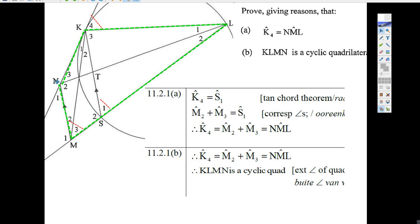But angle M and S here, NMS, this angle in here, which is M2 plus M3, that equals S1 because those are parallel lines. That's corresponding angles. Okay, so there we have it. K4 equals NML. There we go. We just proved it.